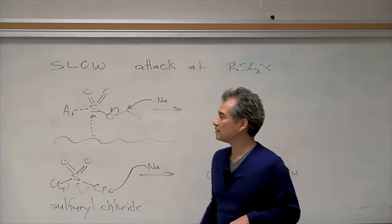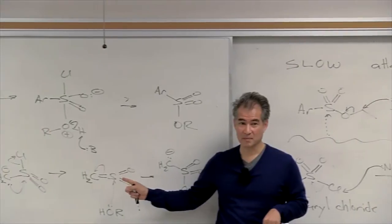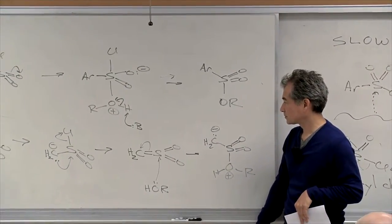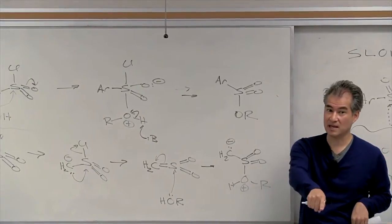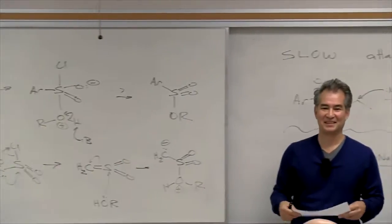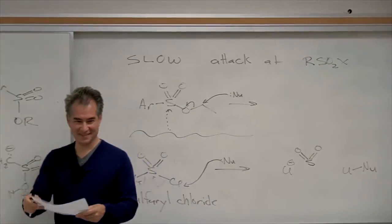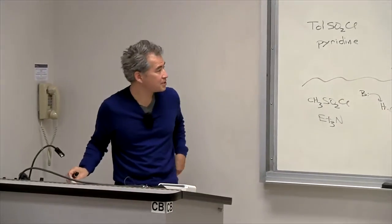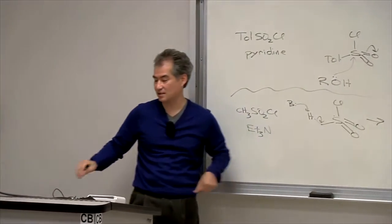So it attacks sulfur over carbon — not because sulfur is bigger, but because the LUMO is bigger on sulfur. So two different mechanisms for substitution of sulfonyl chloride depending on whether there are CH2 groups next to the sulfur.